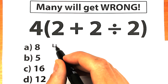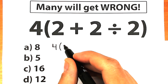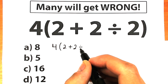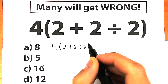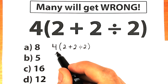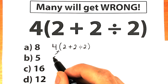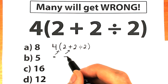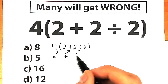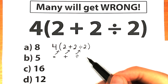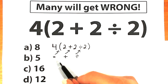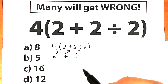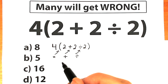First, I want to rewrite this challenge. We have 4, and inside the parenthesis we have 2 plus 2 divided by 2. As you can see, we have a lot of math operations: multiplication behind the parenthesis, addition, and division. Whatever order of operation we select is going to create a different answer.